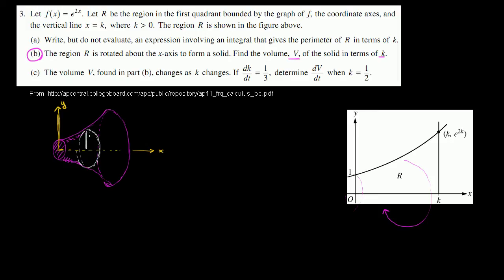This disk is going to have some surface area and then some depth — you can imagine the depth is like the edge of a quarter, while the surface area is the face of the quarter. The volume of this disk is the surface area times the depth. The surface area of a circle is π times the radius squared. The radius is the height between the x-axis and the function, so the radius is e^(2x). The area is π times e^(2x) squared, and multiplying by dx gives the volume of this infinitesimally thin disk.